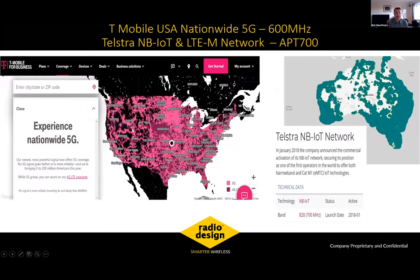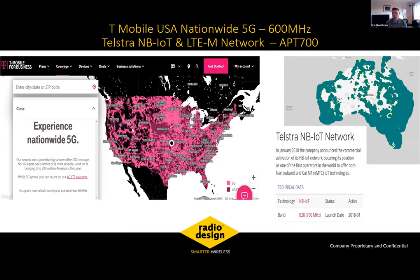A couple of examples of low-band use: the first is the 600 MHz band, straight from the T-Mobile USA website, advertising nationwide 5G coverage — there is no way they could advertise that without low-band spectrum availability. The other example: back in 2018, Telstra announced deployment of their narrowband IoT network at 700 MHz covering something like 3 million square kilometers, plus their LTE-M band at a mix of 700 and 1,800 MHz covering about 4 million square kilometers. That concludes my overview of the current status of 700 MHz.